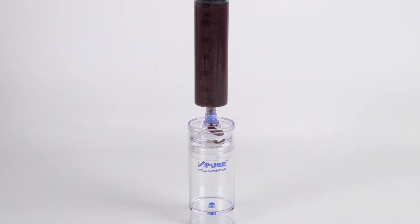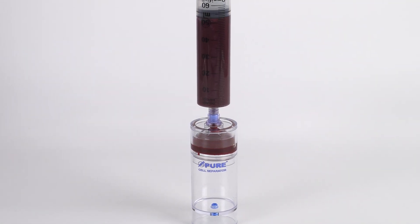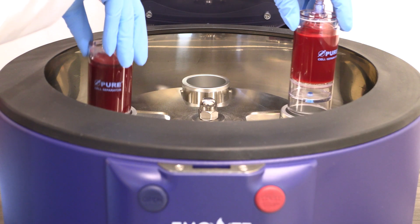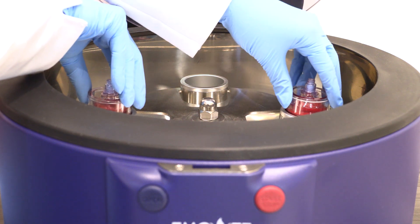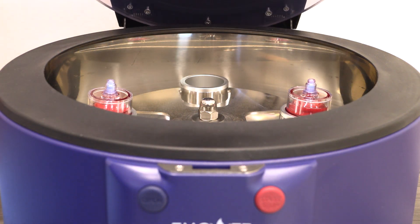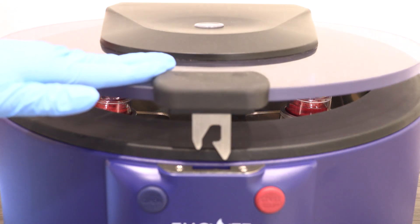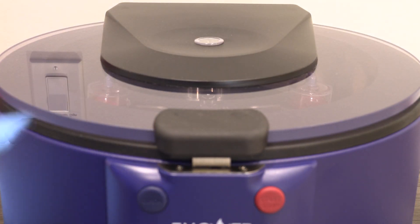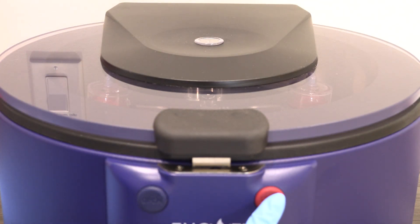Slowly inject the anticoagulated blood into each separator device. Make sure each device has equal volume. Place both devices in the centrifuge rotor at opposite ends. Follow the protocol settings provided in the Pure2 IFU insert. Close the centrifuge lid and press start.